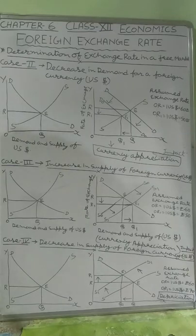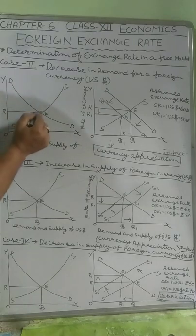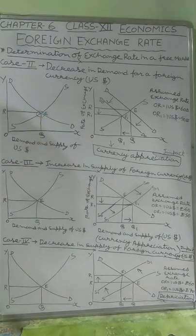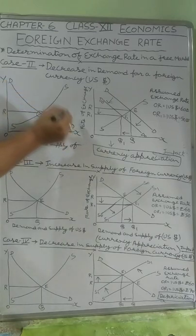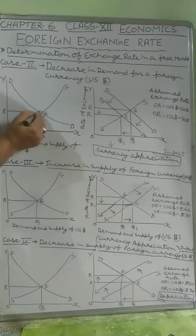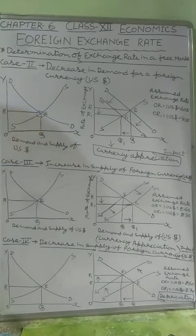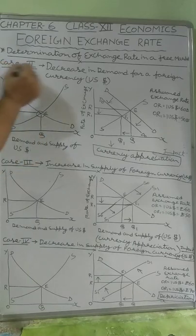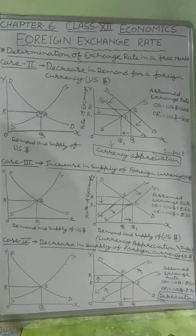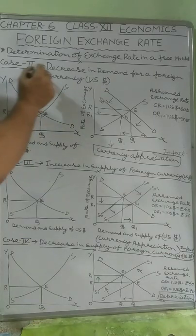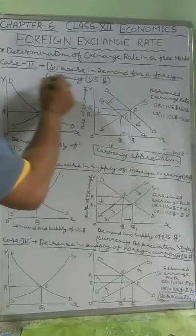The second case: when there is equilibrium in the international money market regarding foreign exchange rate on the basis of demand and supply, the exchange rate is decided at point E where demand and supply intersect each other, the rate of exchange is R, and the quantity of foreign currency is OQ. Now, Case 2 states: what is the impact, in the situation of equilibrium, if there is a decrease in demand for a foreign currency such as the US dollar?